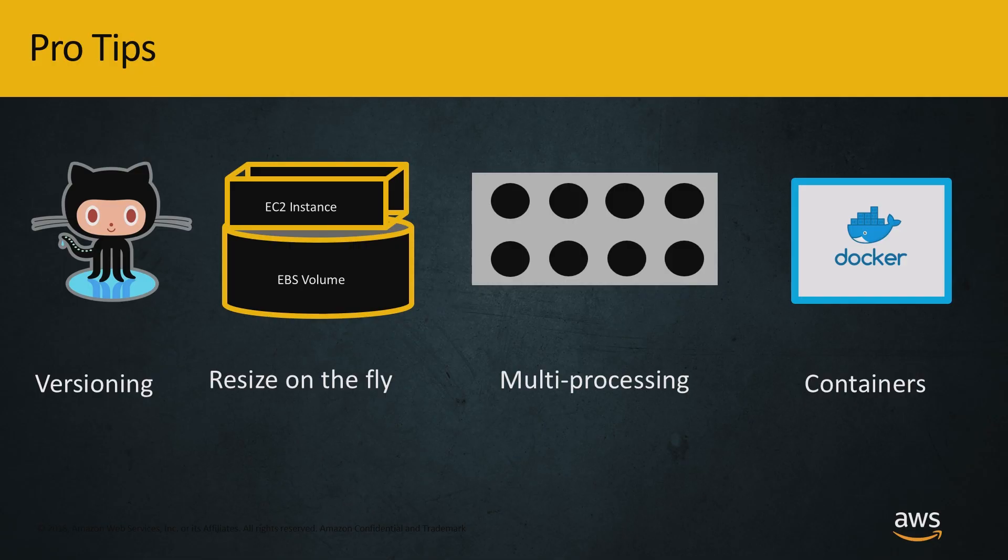Some pro tips to close this out. Versioning, super helpful - so you're holding on to your ETL code after you've written it, you can share it. Resizing that notebook on the fly, definitely helpful. Running multi-processing for feature transformation - on your notebook instance, you can utilize all those cores. And then lastly, you want to think about your Docker container. With that, thank you very much. I hope you enjoyed this session. My name is Emily Weber, I'm a machine learning specialist at Amazon Web Services, and you should have a good day.